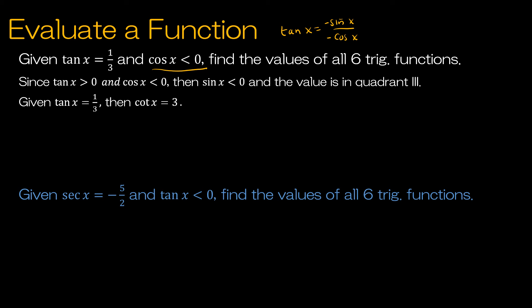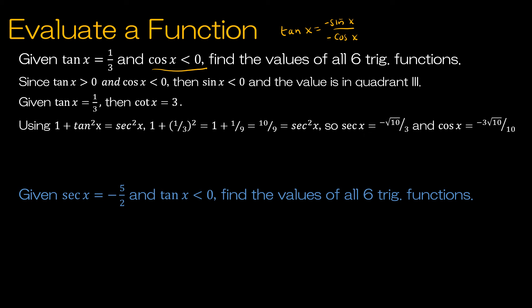Next I'll use the Pythagorean identity: one plus tangent squared x equals secant squared x, because I know the value of tangent. Replacing tangent with one-third and squaring gives me 10 ninths equal to secant squared x. Taking the square root gives radical 10 over 3, and since cosine is negative, secant is negative radical 10 over 3. Rationalizing the denominator, cosine equals negative 3 radical 10 divided by 10.